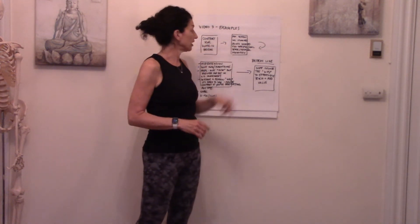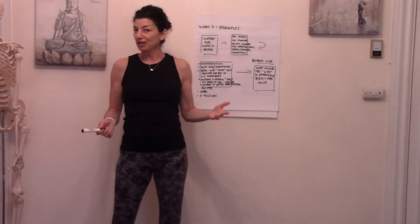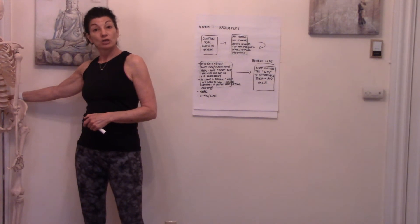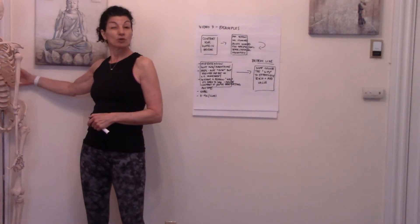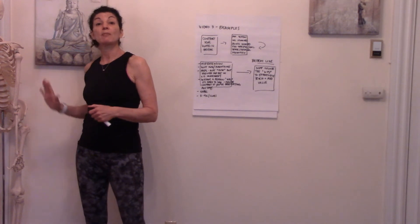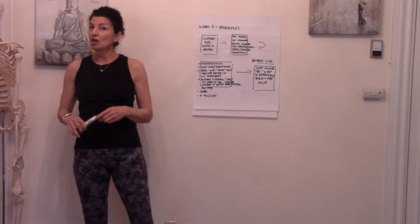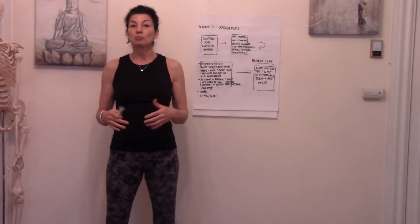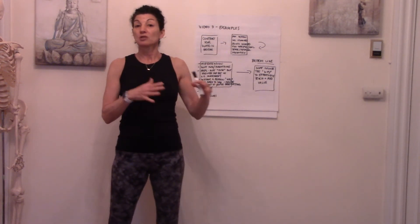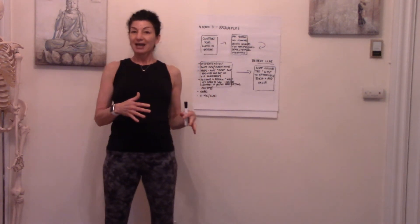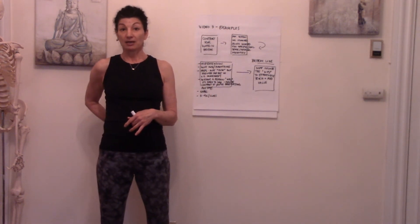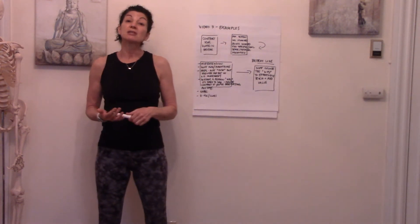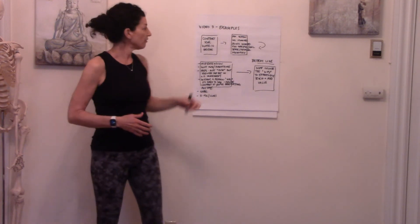So: anatomical action, muscles involved — gluteus maximus on the back of the body. Next: joints involved. In bridge, the joints involved are primarily the hips. We could also reference the SI joint to a certain extent, and even the lumbar spine, though we want the primary action to be hip extension. That distinction is important — cueing people to work more toward hip extension and less toward movement through the lumbar spine.